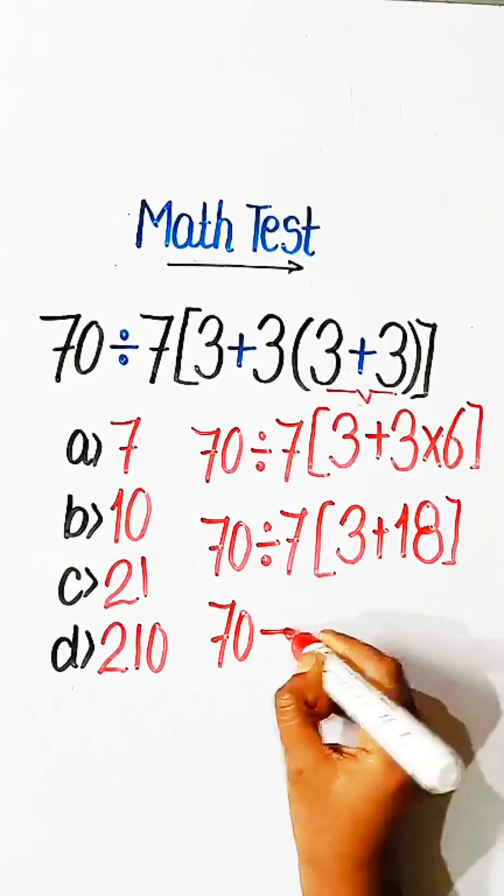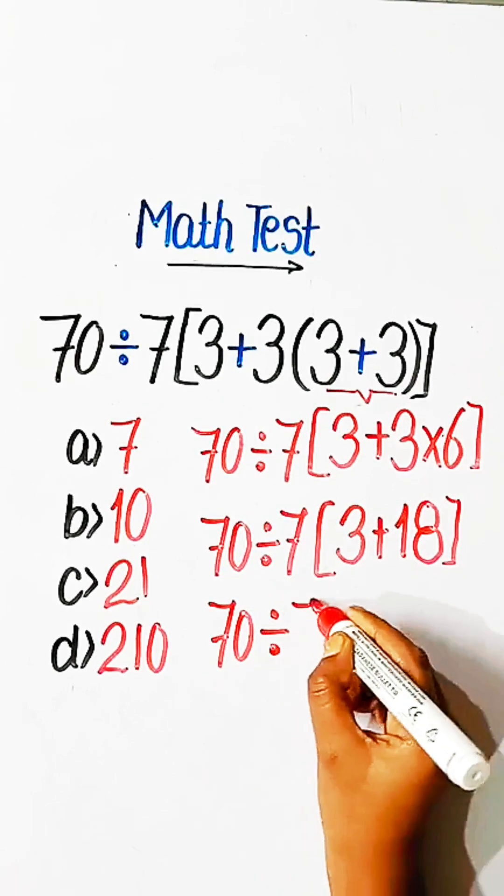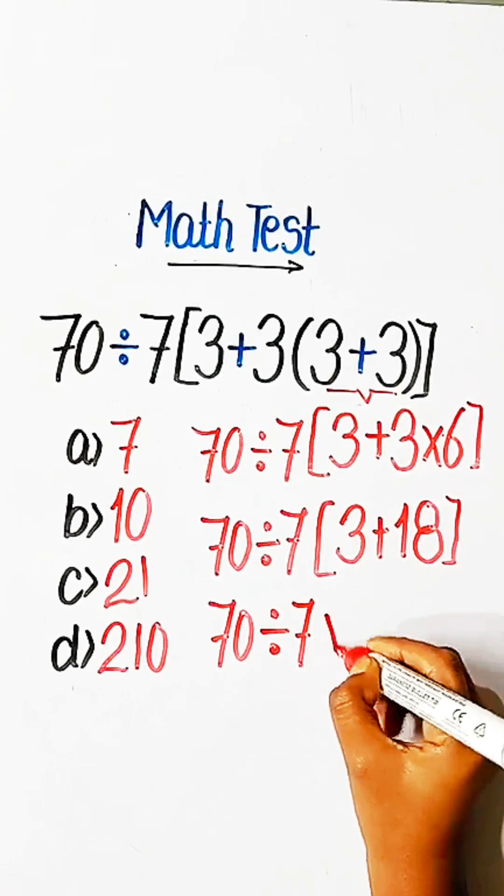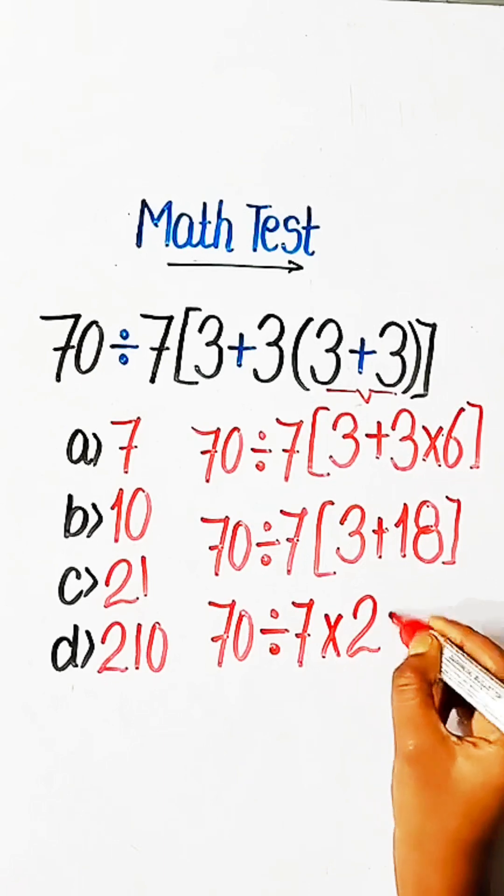70 divided by 7, bracket 3 plus 18, equals 21.